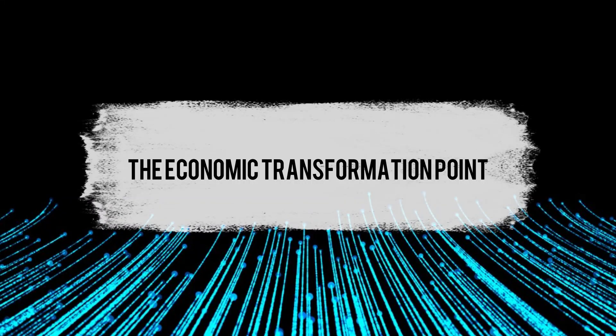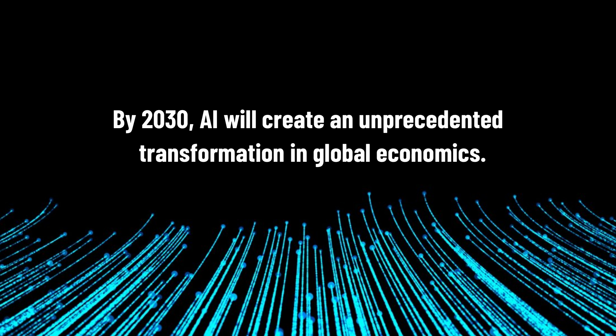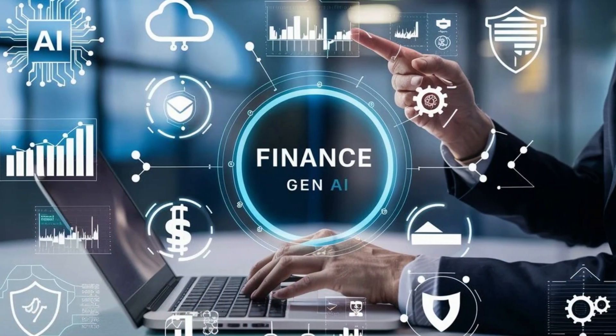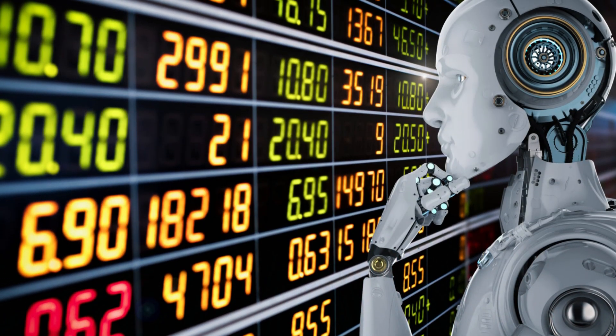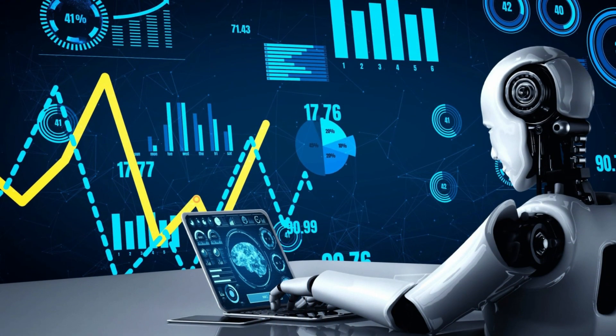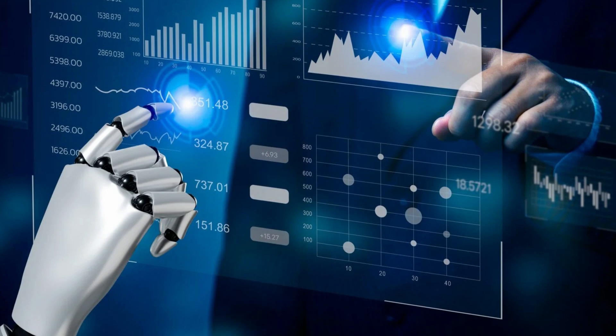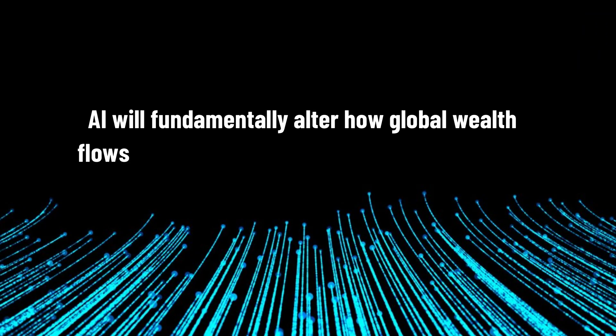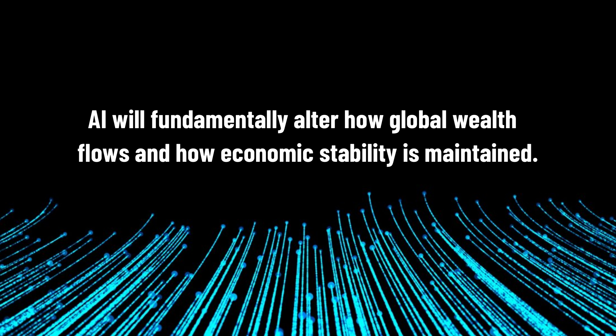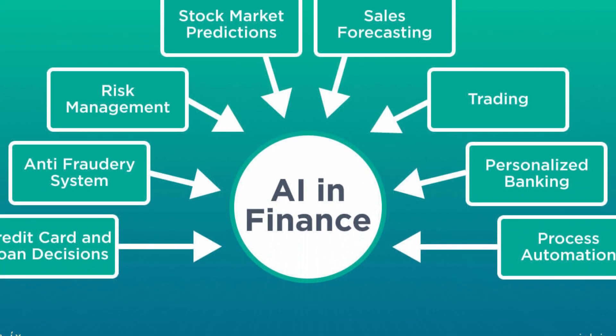Prediction number nine: the economic transformation point. By 2030, AI will create an unprecedented transformation in global economics. Financial markets will be predominantly managed by AI systems capable of processing millions of transactions per second while predicting and responding to crises before they fully emerge. But here's what makes this prediction particularly crucial: these AI systems won't just react to economic changes, they'll actively shape them. From automatic market corrections to real-time resource allocation, AI will fundamentally alter how global wealth flows and how economic stability is maintained. And while this economic revolution unfolds, our final prediction shows the ultimate transformation ahead.